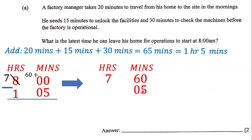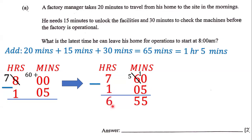We have five minutes here and one hour here, and we still have to subtract. Zero minus five — we can't do it, so we borrow from the six, which becomes five, and this becomes ten. So 10 minus five is five, and five minus zero is five, and seven minus one is six. So the latest time he can leave home for operations to start at 8 a.m. is 6:55 a.m.